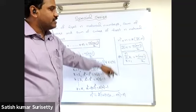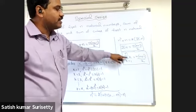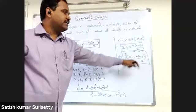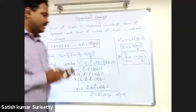Or written another way, sigma k for k equal to 1 to n is n into n plus 1 by 2.